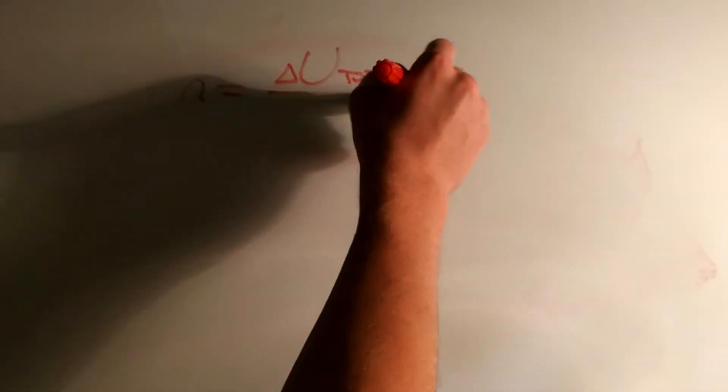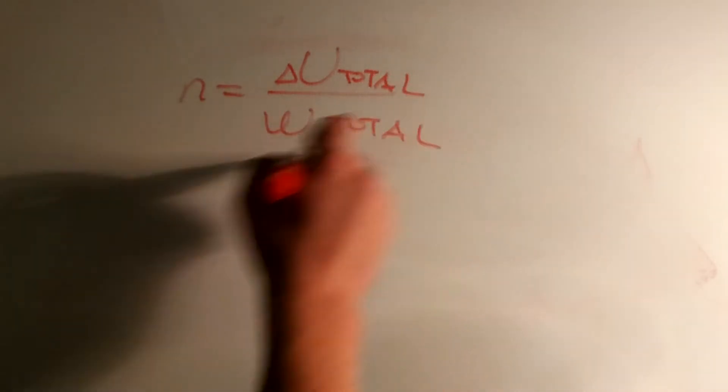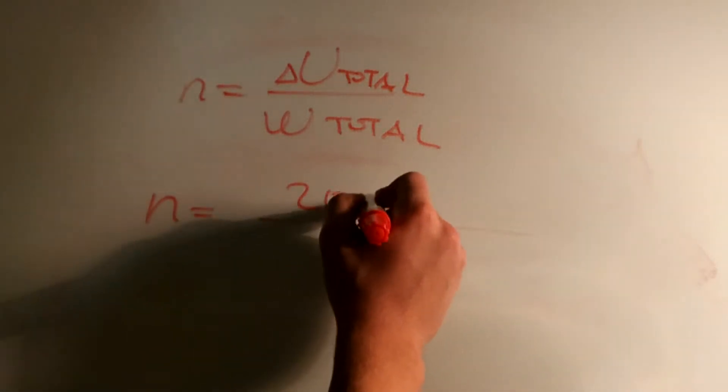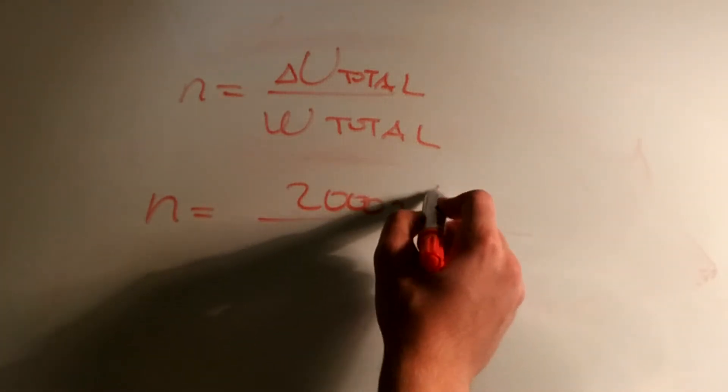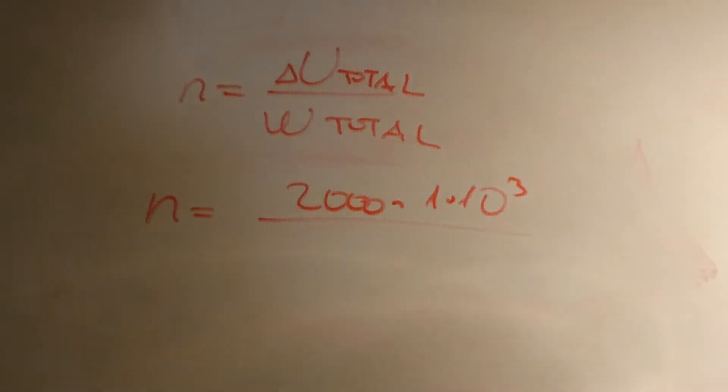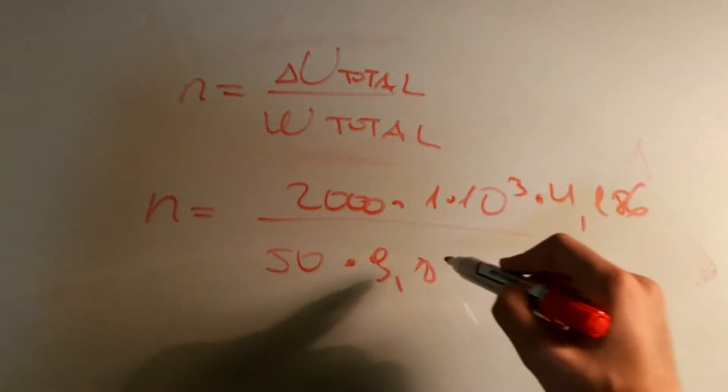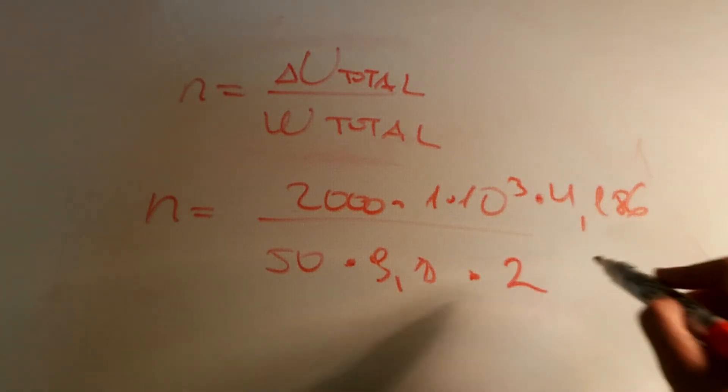So basically n will be equal to the internal energy total or the work total. Now we are talking about calories with a capital C, so for the equation we have 2,000 calories times 1 to the power of 3, since 1 calorie with a capital C is equal to 1 kilocalorie, times 4.186 since we are converting it into joules. And then we have for the mass 50 kilograms times 9.8 meters per second squared times 2 meters.